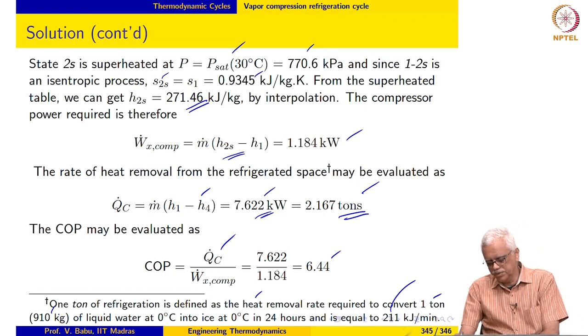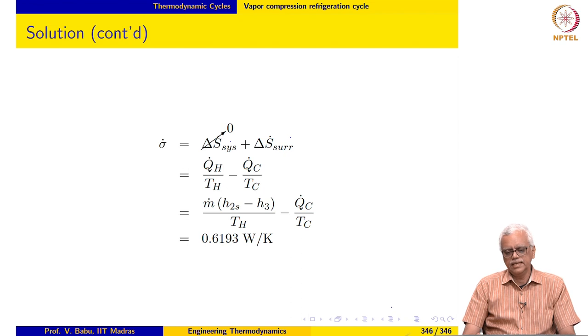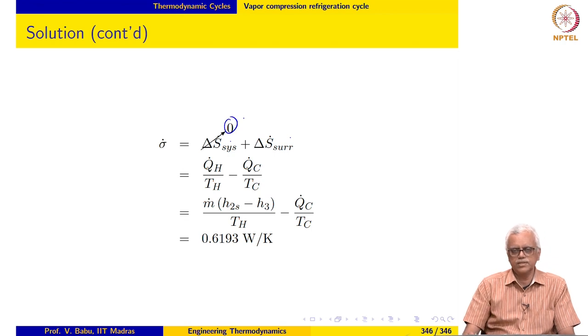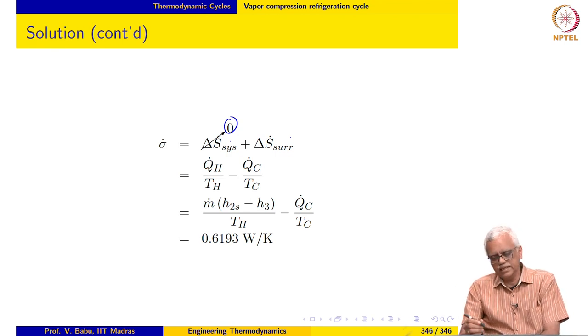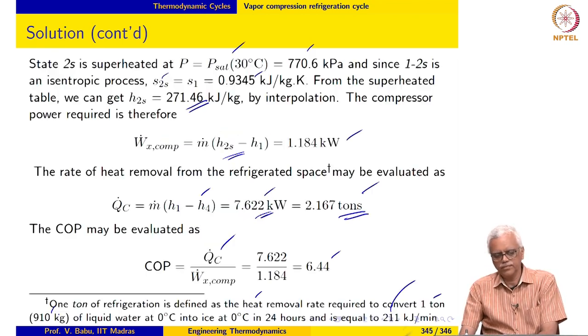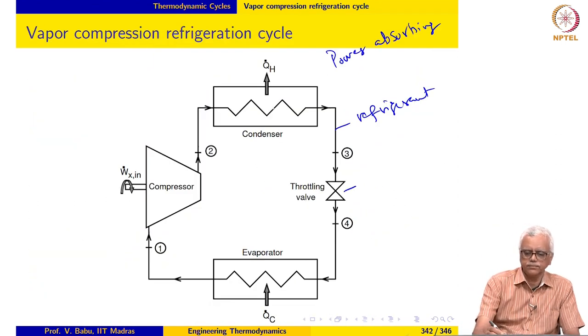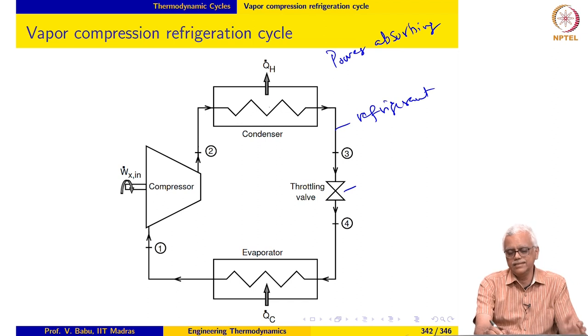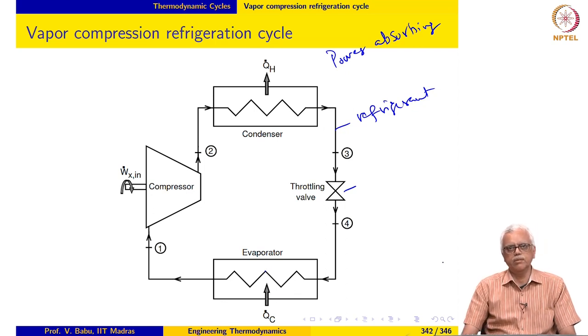Now rate of entropy generation in the universe again is a sum of delta S system plus delta S surroundings. And we have taken the R134A to be our system and since it executes the cyclic process, delta S system is 0. Delta S surroundings comes, delta S surroundings is the sum of two things. One, the heat that is rejected in the condenser. The entropy of the surroundings increases as a result of heat that is rejected in the condenser and the entropy of the surroundings decreases as a result of heat that is absorbed by the system in the evaporator.